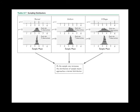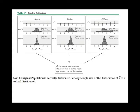Looking at the picture: in Case 1, if the original population is normally distributed — starting low, reaching higher, then becoming lower again — this is a normal distribution. When sample size n equals 1, and we increase to n equals 10, the graph is still normally distributed. If we keep increasing to n equals 50, the distribution is still normally distributed.